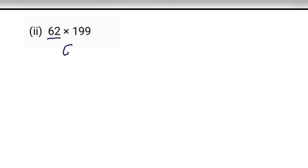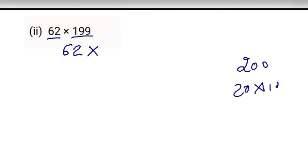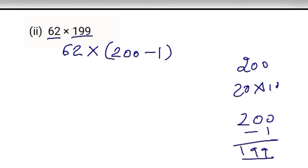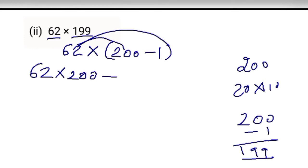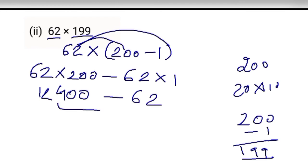Next: 62 multiply 199. The nearest multiple of 10 is 200, and 200 minus 1 is 199. Use distributive property: 62 multiply 200 minus 62 multiply 1 equals 12400 minus 62. Both have different signs so subtract — the answer is 12,338.